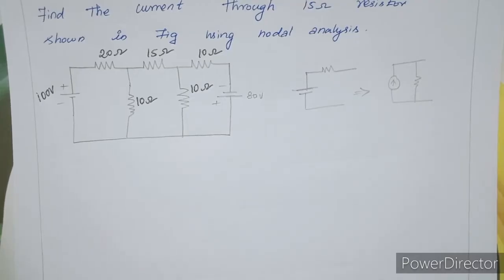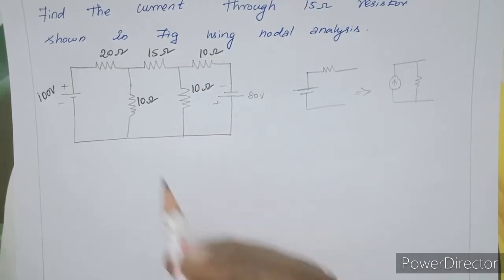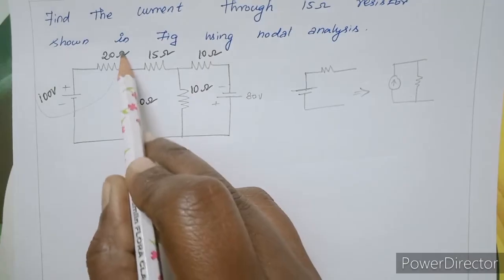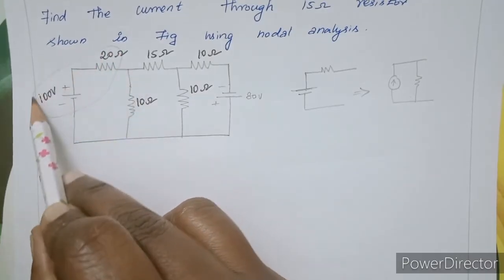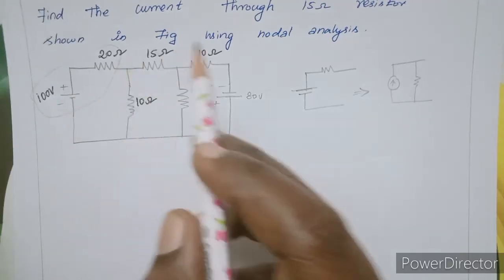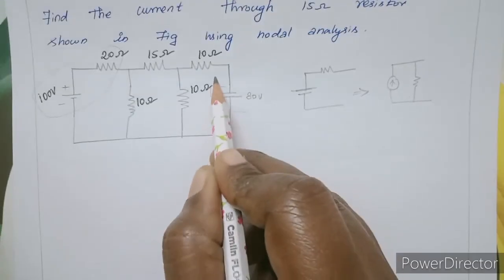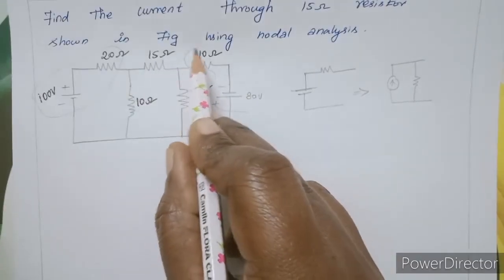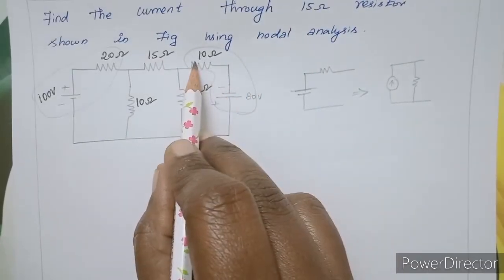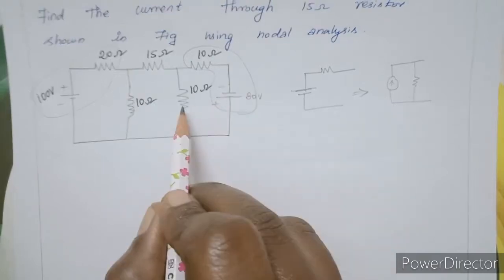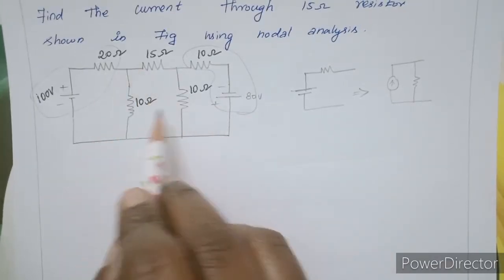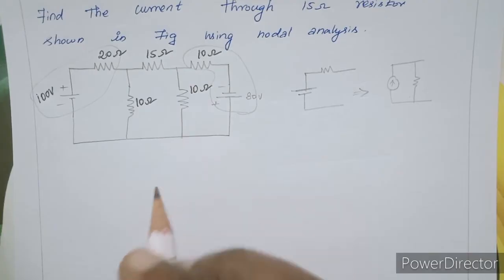Now we will redraw the circuit using source transformation. We drop the current source. Here there is a 100 volt source with 20 ohm, and here there is an 80 ohm unit. We have a voltage source in series with resistance, which we can transform. Balance the resistance.